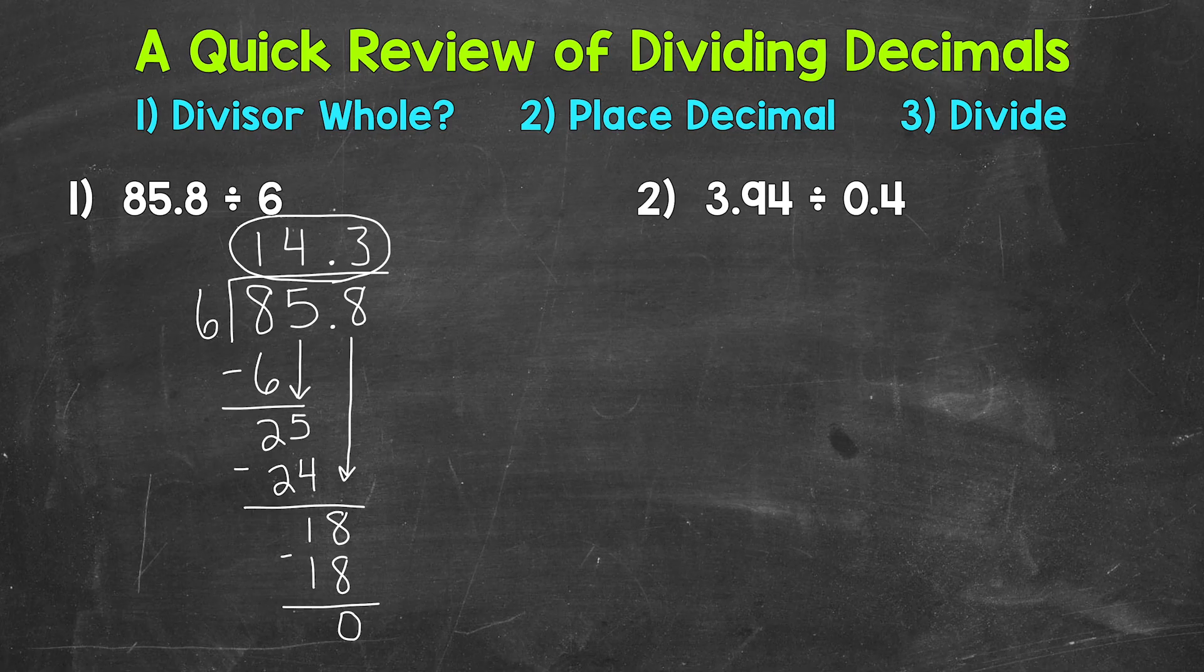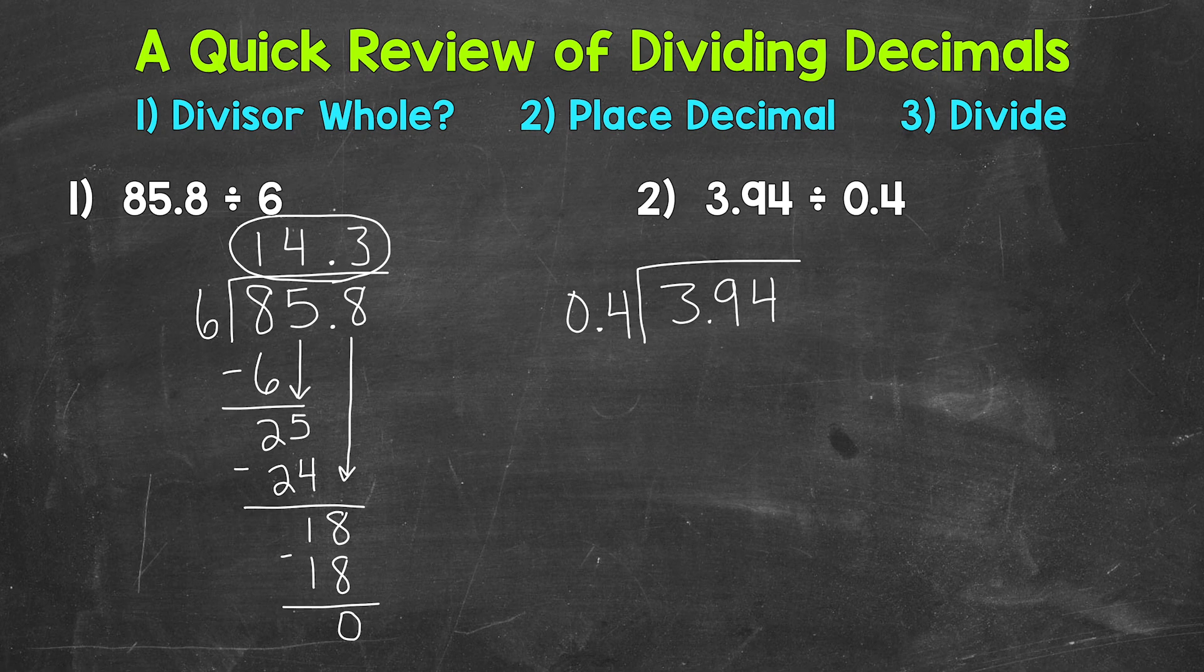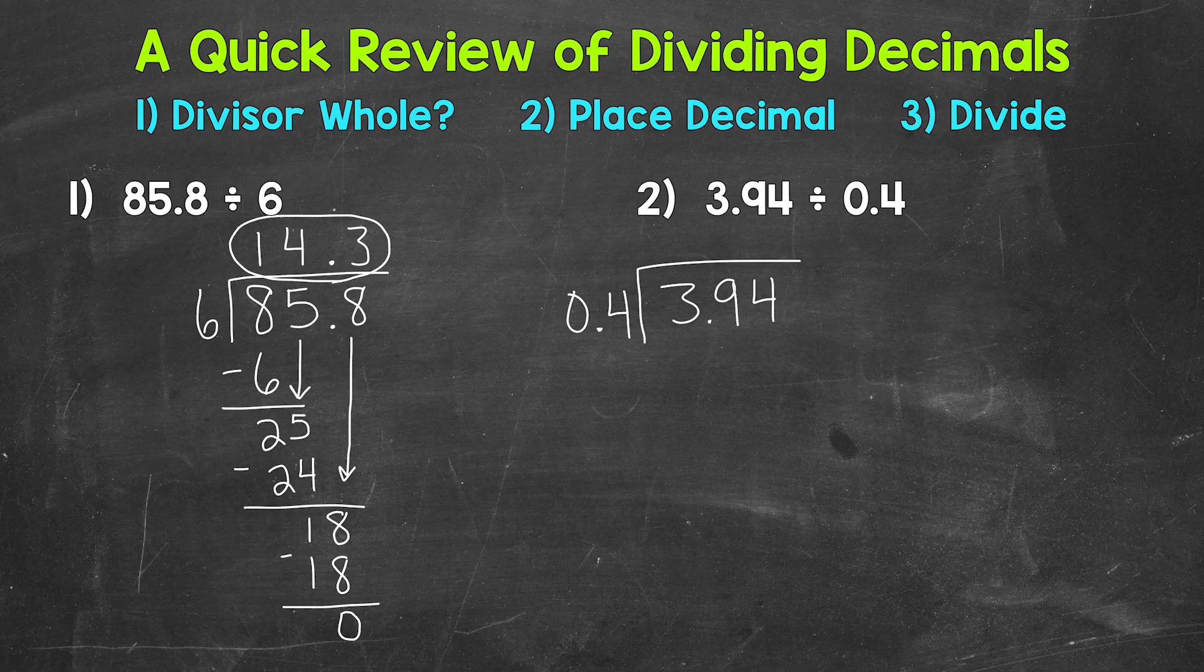Let's move on to number 2, where we have 3.94 divided by 0.4. So we need to set this up. 3.94 is our dividend, the number we are dividing, and we are dividing by 0.4. So once we are set up, we need to see if our divisor is whole. Well, 0.4 is not a whole number, so we cannot bring the decimal straight up quite yet.